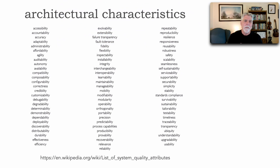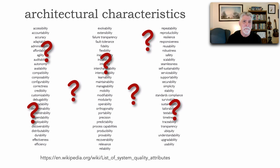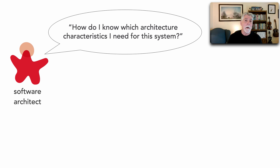In the last lesson, we took a look at architectural characteristics and saw various categories that we can place these in to gain a better understanding of which ones I might need. But in this lesson, I want to take that one step further and ask: even with categories, how do I know which ones I need? It turns out that most architectural characteristics come from three different sources.